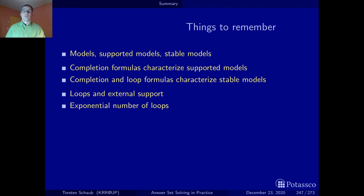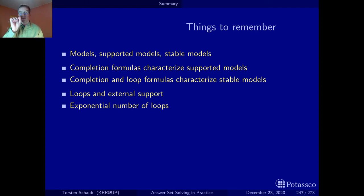The classical models of a logic program can simply be obtained by interpreting the rules in the logic program as implications and the comma as a conjunction. Then you take the classical models of the set of implications, and there you go.